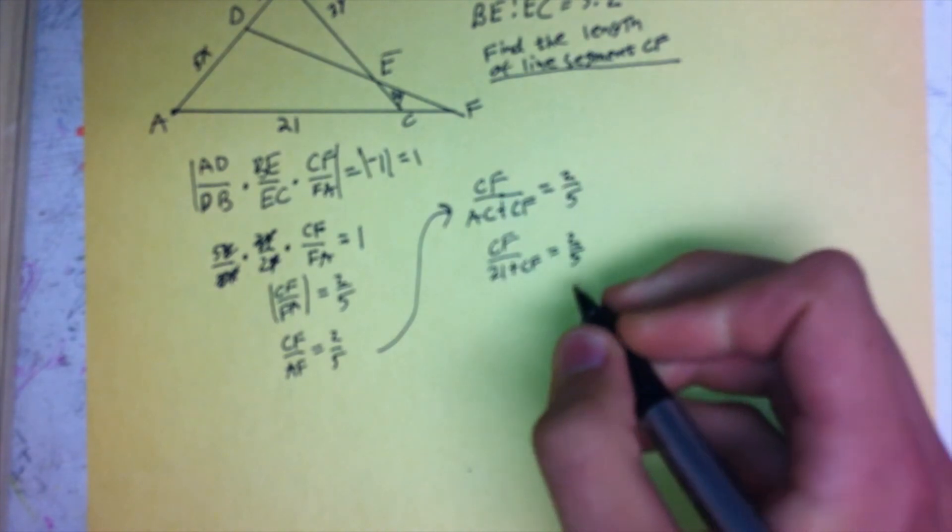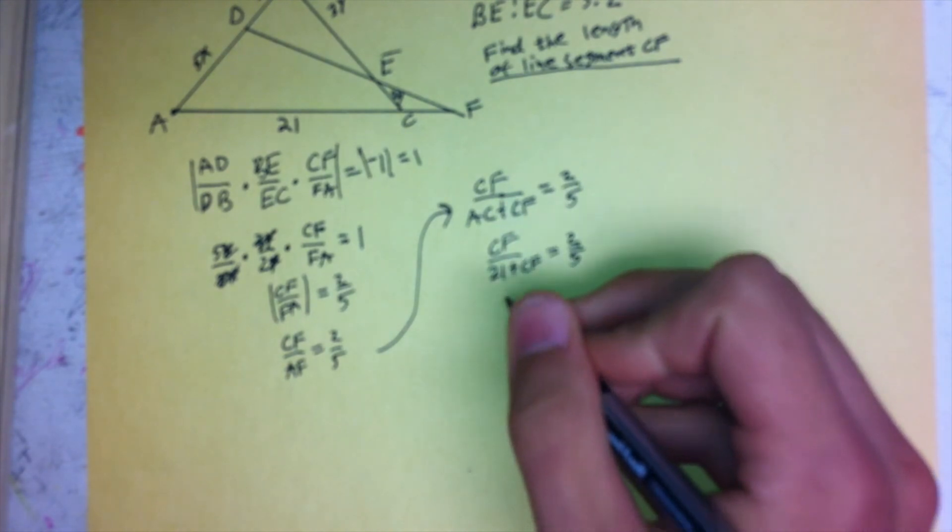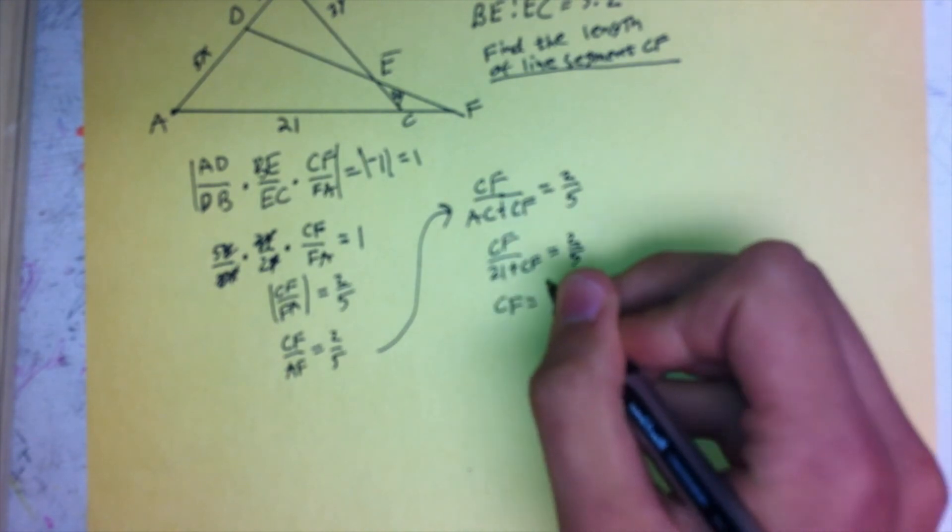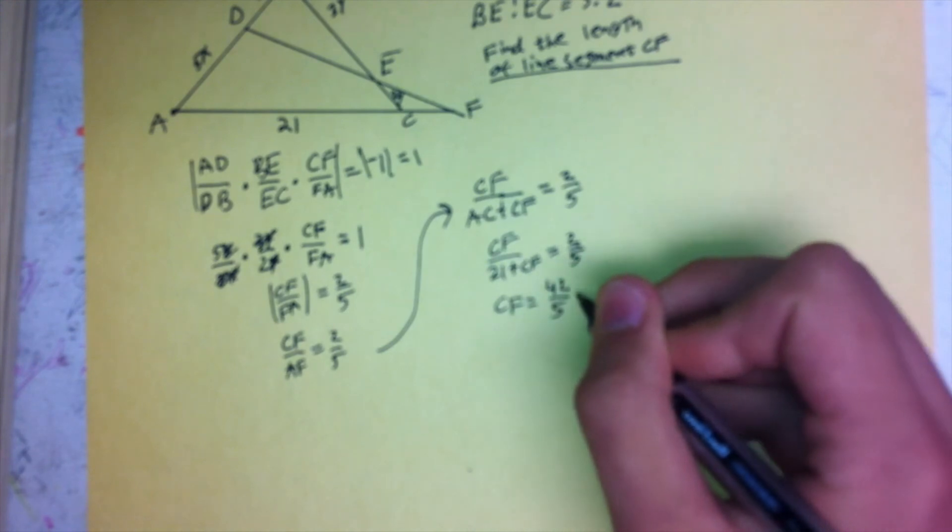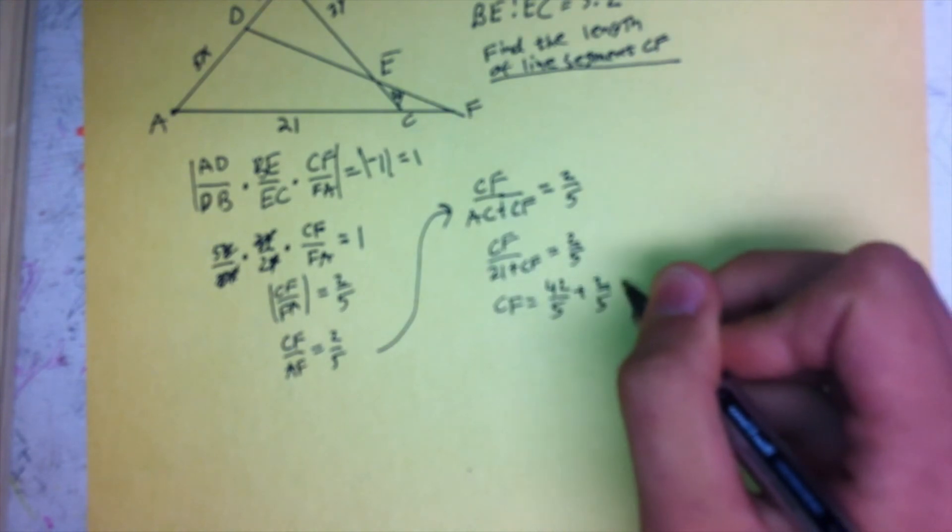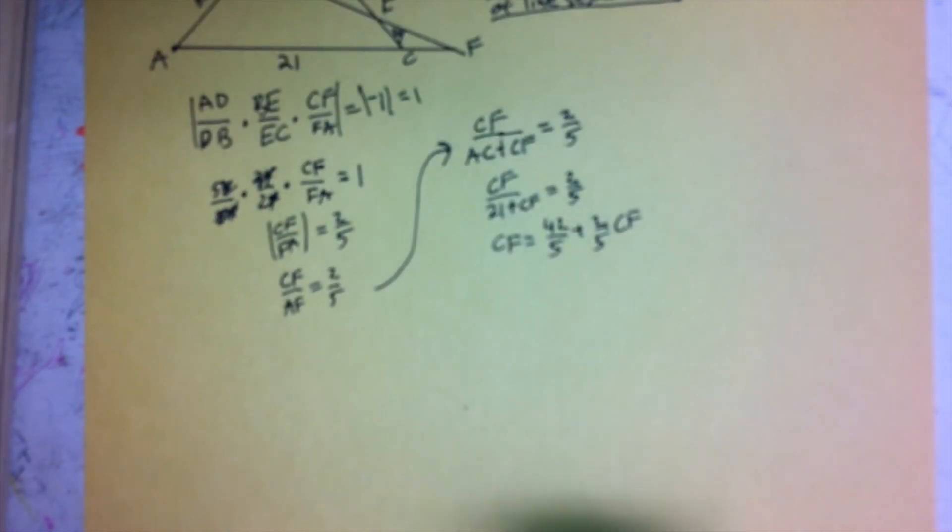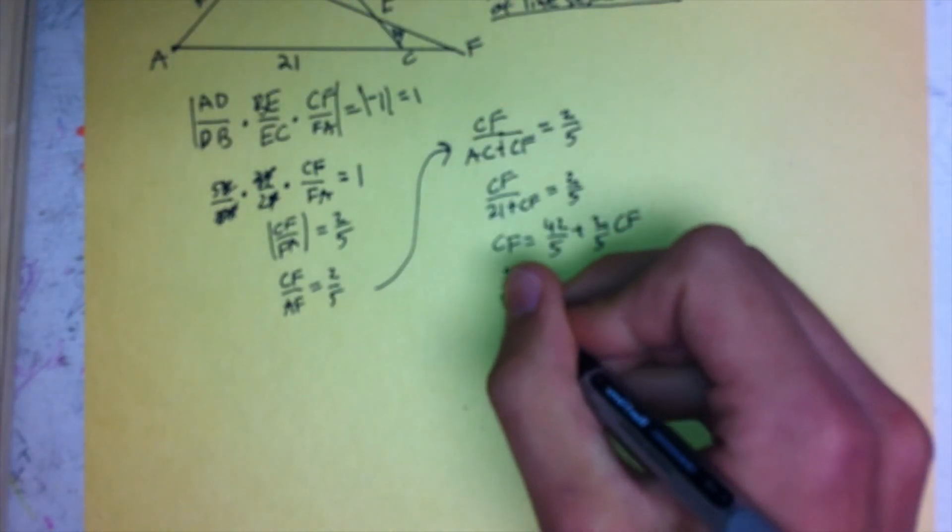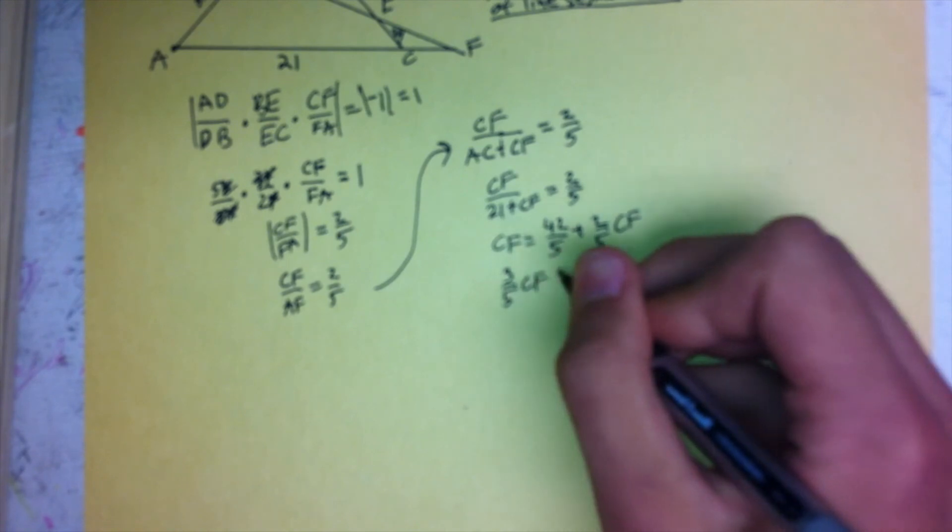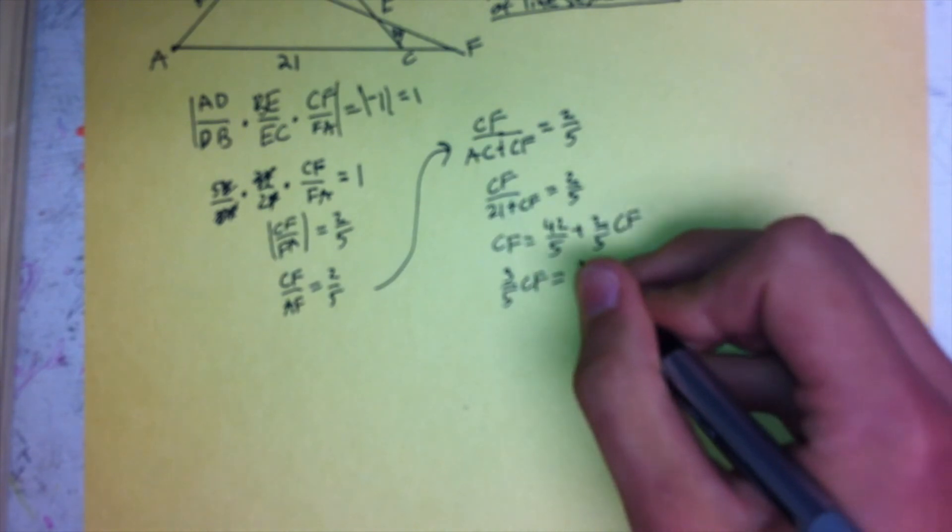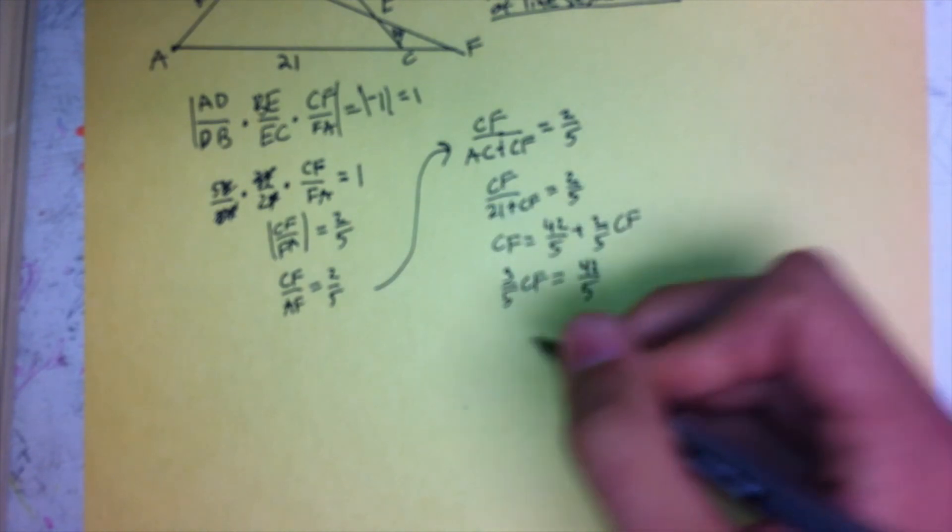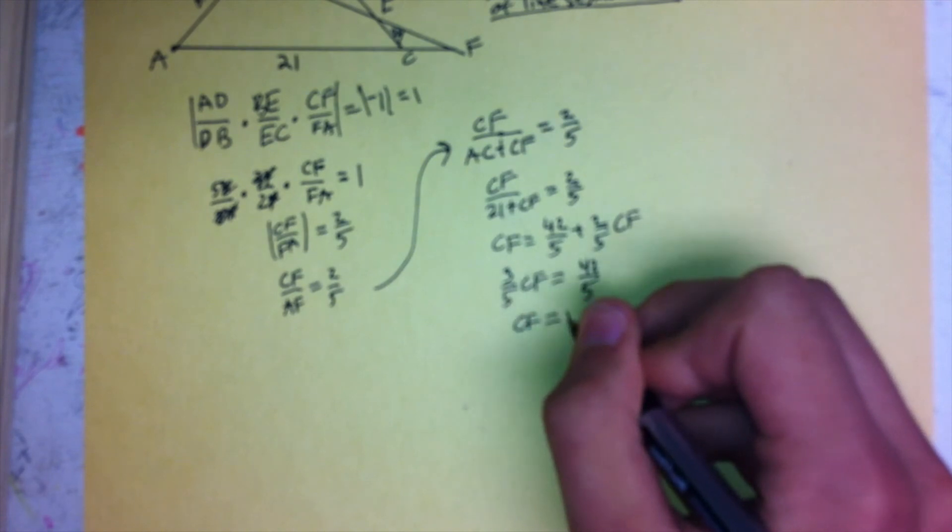And then, multiplying this out, it gives us CF equals 42 fifths plus 2 fifths CF. Subtracting 2 fifths CF from each side gives 3 fifths CF equals 42 over 5, and therefore, CF is equal to 14.